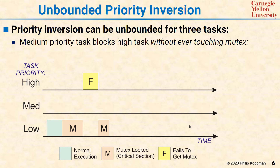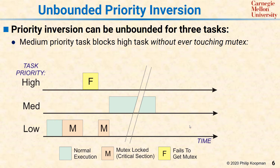At that point, the high priority task decides it needs to run and it needs the mutex. It fails to get the mutex because the low priority task has it, so it relinquishes control and the low priority task starts computing again. But before the low priority task gets done, a medium priority task comes along. Here's the catch: the high priority task has relinquished control until the mutex is released, so it's just sitting and waiting. The medium priority task is higher than the low, so it grabs control and runs as long as it wants to.